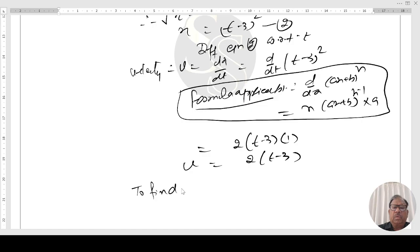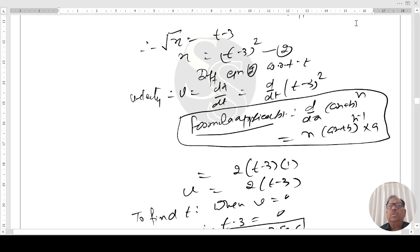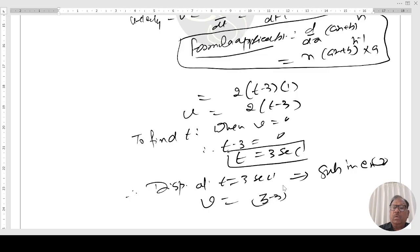To find when velocity equal to zero. Therefore t minus 3 equal to zero, t equal to 3 seconds. Therefore displacement at t equal to 3 seconds. Substituting in equation 2, displacement comes out to be 3 minus 3 whole square, that is zero meter. This is the first part.